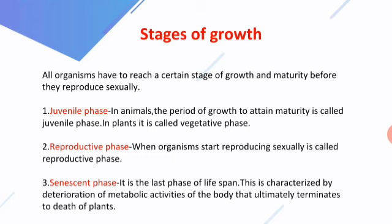The three phases of growth are: juvenile phase, reproductive phase, and senescent phase. The juvenile phase is the period of growth required to attain maturity before an organism reproduces sexually. In plants, this phase is called the vegetative phase. This phase is of variable duration in different organisms.